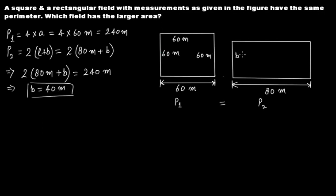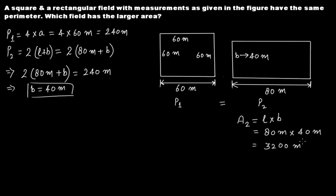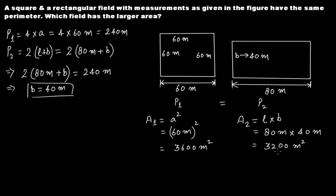Since B equals 40 meters, we can now calculate the area of the rectangle. Area of rectangle A2 equals length times breadth, that is 80 meters times 40 meters, giving 3200 square meters. The area of the square A1 equals 60 squared, which is 3600 square meters. Comparing these two, A1 is greater than A2 — the square has the larger area.